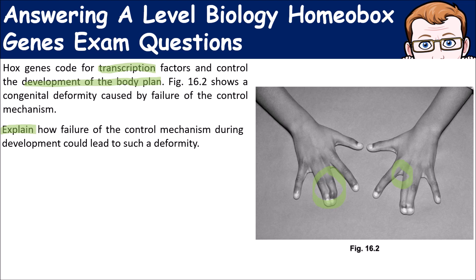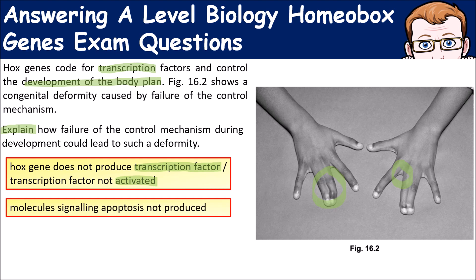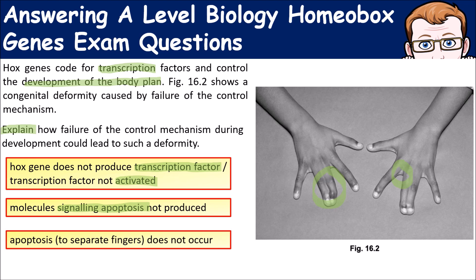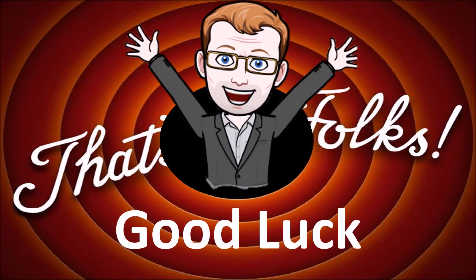The key things to talk about are: the HOX gene does not produce the transcription factor, or the transcription factor is not activated; therefore the molecules signalling apoptosis are not produced; and so apoptosis — which would allow for the separation of the fingers — does not occur.